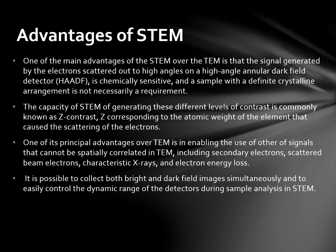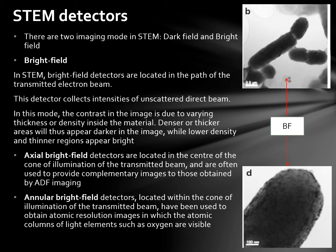There are two imaging modes in STEM: dark field and bright field. In STEM, bright field detectors are located in the path of the transmitted electron beam and collect intensities of the unscattered direct beam. In this mode, contrast in the image is due to varying thickness or density inside the material. Denser or thicker areas appear darker in the image, while lower density and thinner regions appear bright. Bright field detectors located in the centre of the cone of illumination of the transmitted beam are often used to provide complementary images to those obtained by ADF imaging.